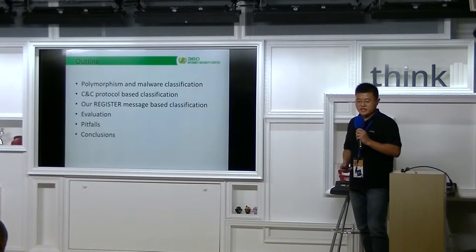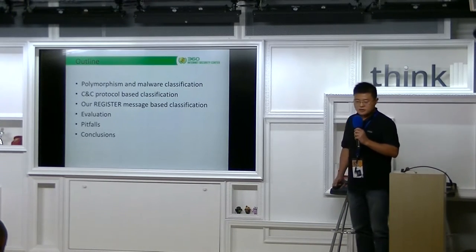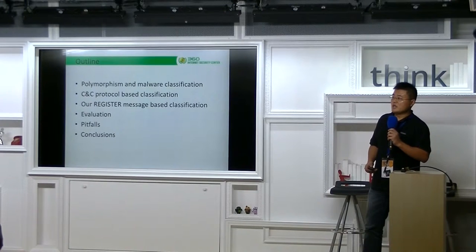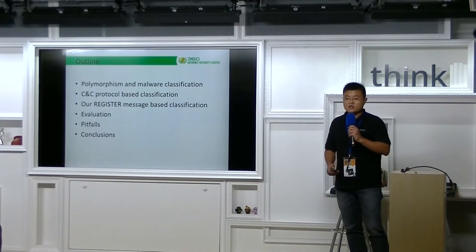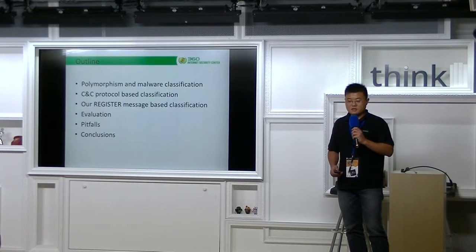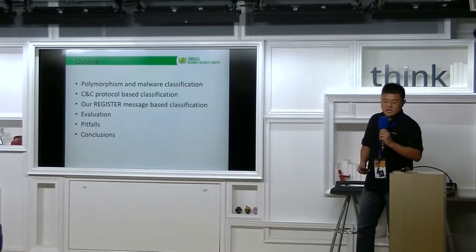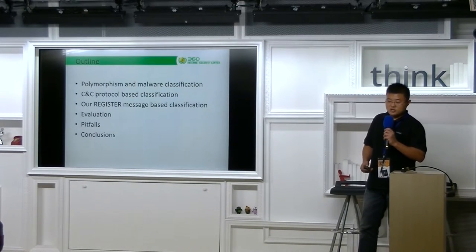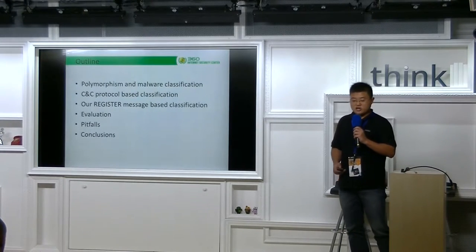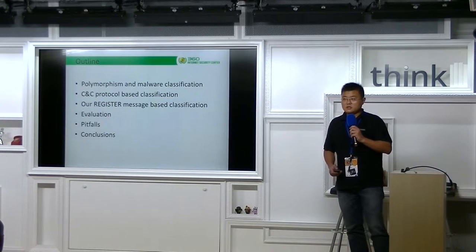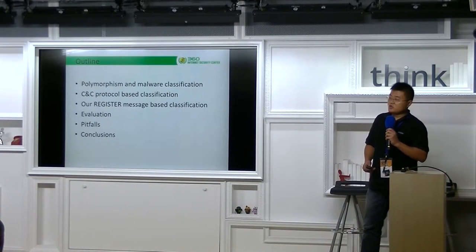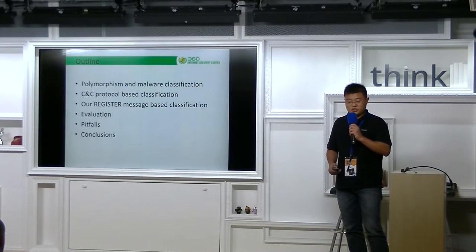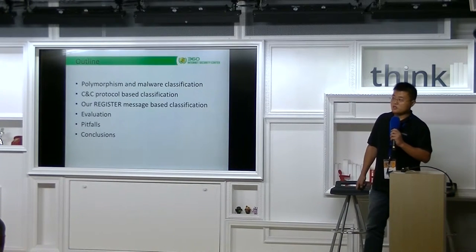This is the outline. First, I will take some time on polymorphic malwares and current classification technologies. Second, I will talk about C&C protocol-based classification. Then I will show you our solution, including the definition of registered message and the solution details. Next is elements and evaluation results. Then I will show you some pitfalls that exist in our solution. The final part is our conclusion.